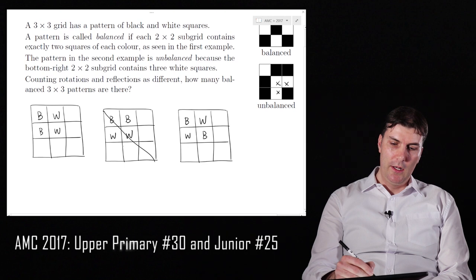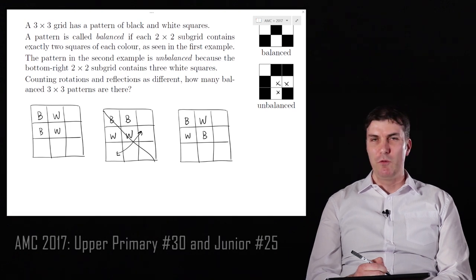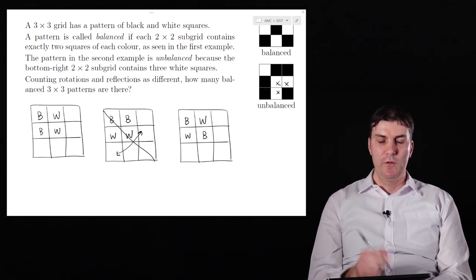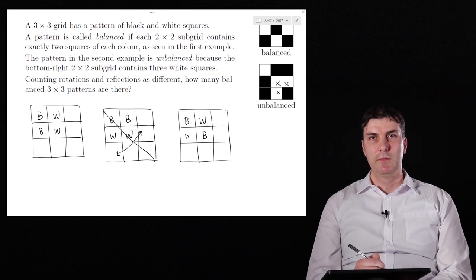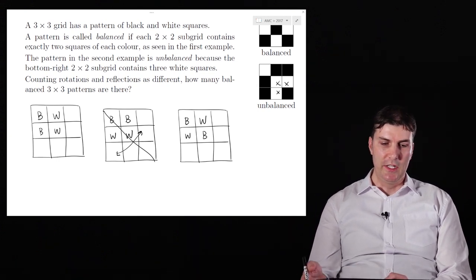If you imagine a line along the diagonal and you switched every block for the one in the opposite side, then you would get the pattern in the first example. So we don't really need to count these all again. Whatever we get from the first one, we can just double that and that'll do us for the second as well. So let's see how we can finish this off.